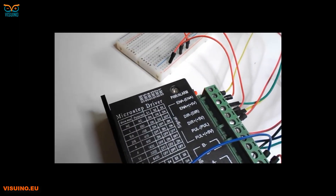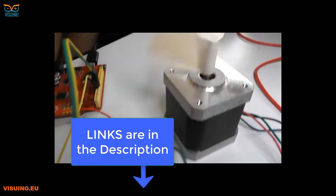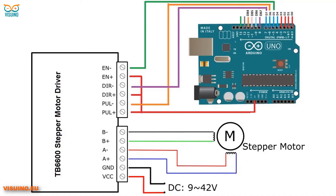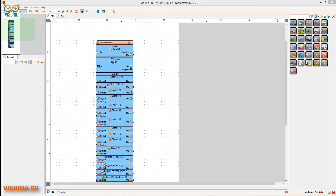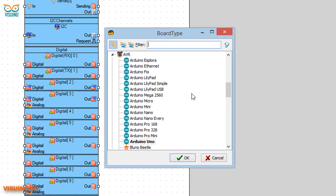In this tutorial we will set the stepper motor to make 100 steps in one direction and 100 steps in reverse direction. Wire the motor and the driver like you see on the schematic. Pin 5 will be used to enable the driver, pin 6 will be used for step pulses, and pin 7 will be used to set the motor direction. Start Viswino and click on the board settings to select your board — in our case it's Arduino Uno.